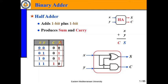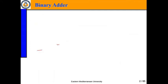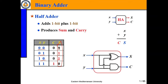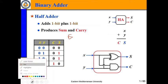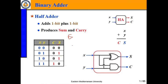The sum bit is a one-bit output. The exact behavior of the sum is like an Exclusive OR gate. An Exclusive OR gate gives output one when the two input bits are different.